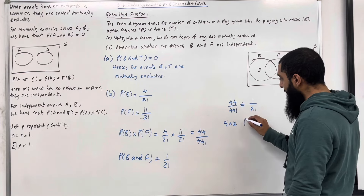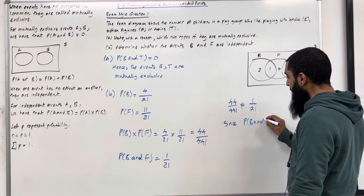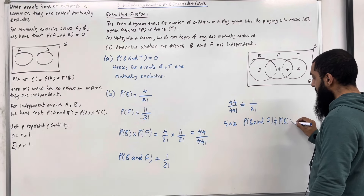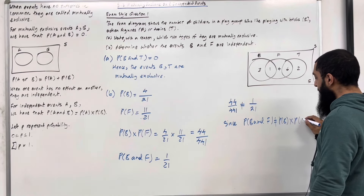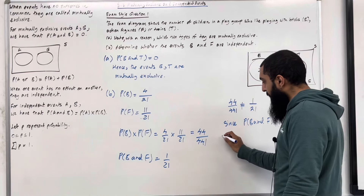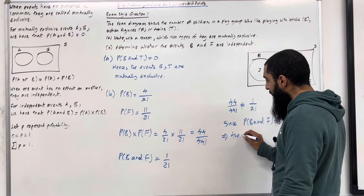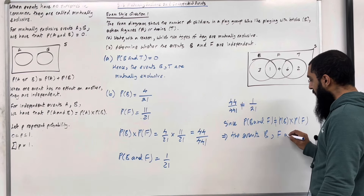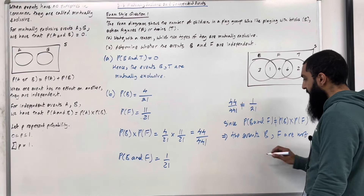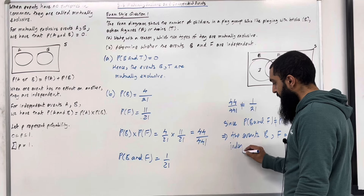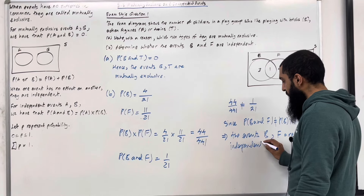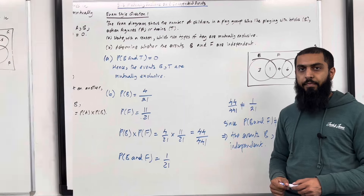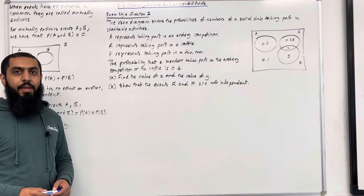What we have here is that 44 over 441 is not equal to 1 over 21. Since probability of B and F is not equal to probability of B times probability of F, this implies that the events B and F are not independent. This completes exam style question 1.